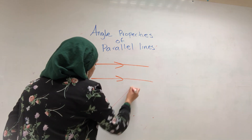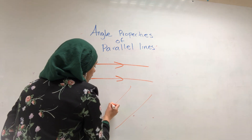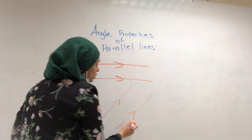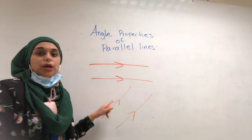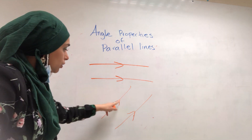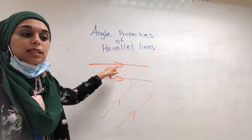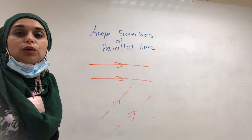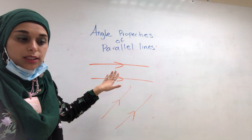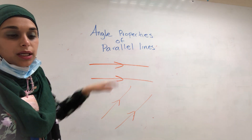Parallel lines can be in any direction. In math, we show that lines are parallel by drawing arrows on them. This tells us mathematically that these lines are parallel, meaning they will not be intersecting. So these are parallel lines.